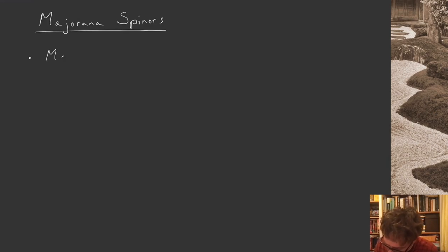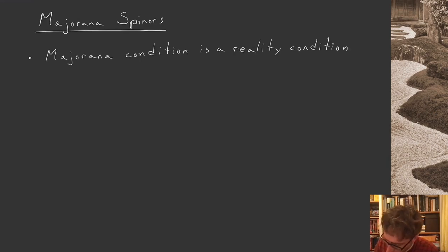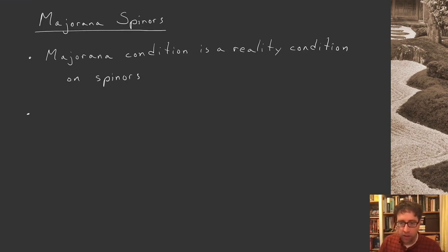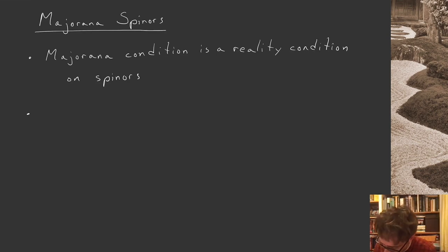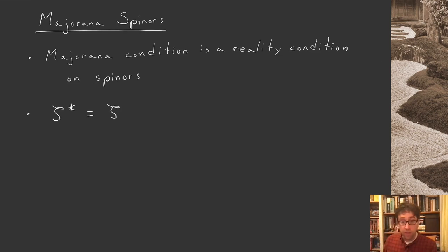The Majorana condition is a reality condition on spinors. Let's start naively and we'll see that our initial take on how to impose a reality condition is not really general enough. You might think: if you have a spinor zeta and you take the complex conjugate of it, the reality condition might just be to say that the complex conjugate of that spinor is the spinor itself. It's a very reasonable way to start.